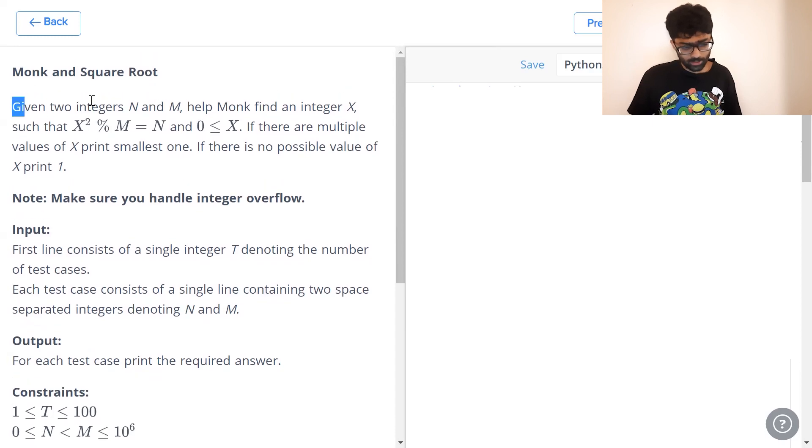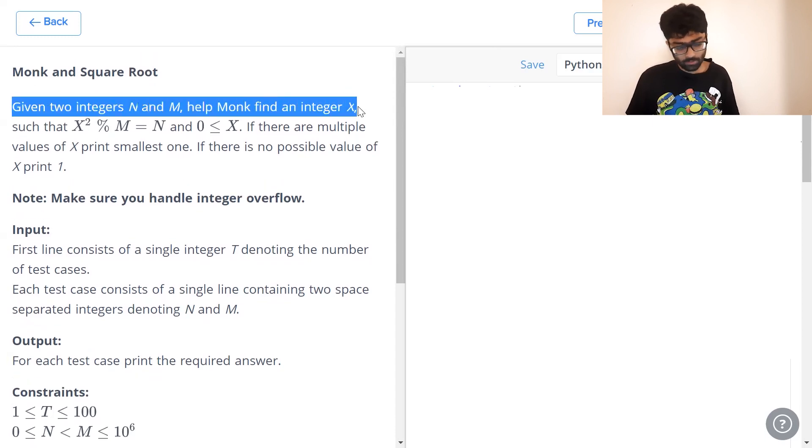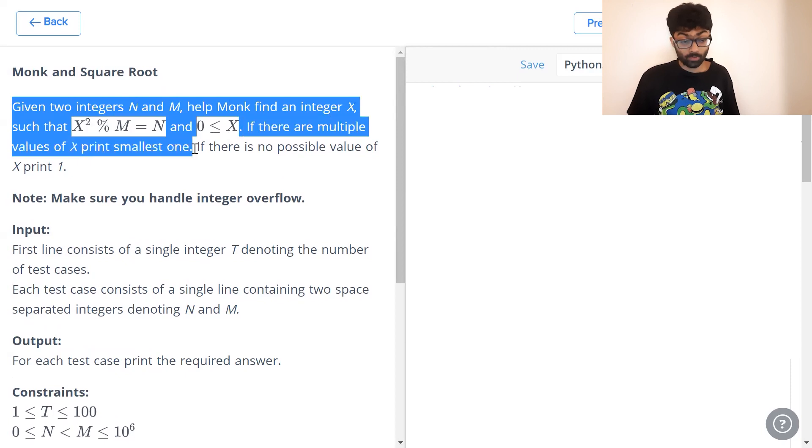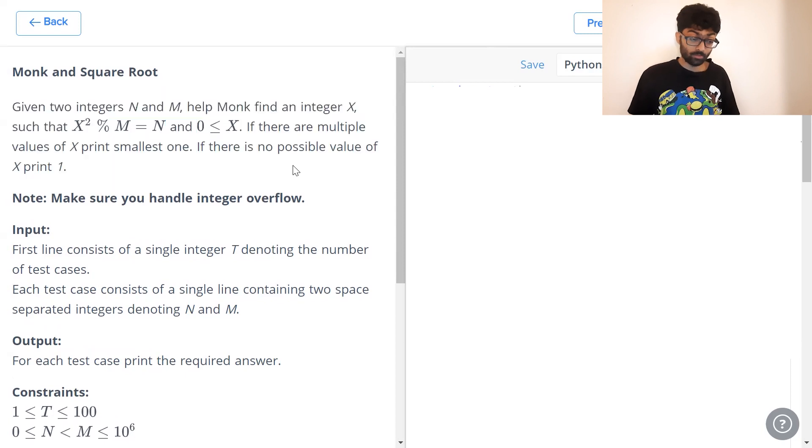Monk and square root. You're given two integers N and M, help Monk find an integer X such that X² mod M equals N and 0 ≤ X. If there are multiple possible values, print the smallest one and if there is no possible value, print minus one. That's supposed to be negative one.